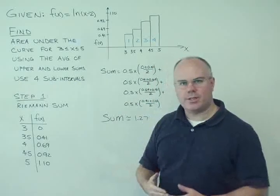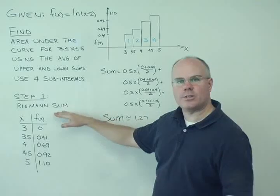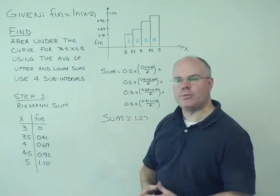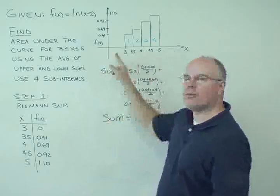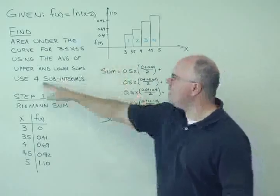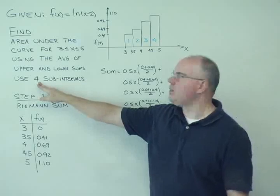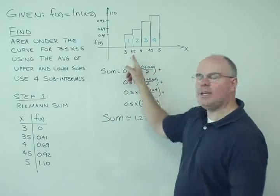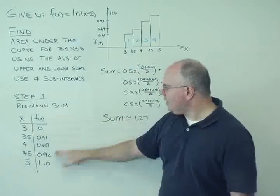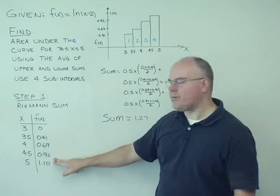So the first approach we're going to take for this is using a Riemann sum, and let's go over that so we can understand what's going on. All we do in a Riemann sum is we break up our domain for the function. In this case, we want to use four equal subintervals, and so I've divided the domain from 3 to 5 into 0.5 increments.